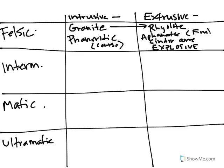Now let's go down to our intermediates. Our intermediate magma, when that cools into a rock, that forms a diorite. And is it phaneritic or aphanitic? Hopefully you said phaneritic. And what is diorite's extrusive equivalent? Hopefully you said andesite.